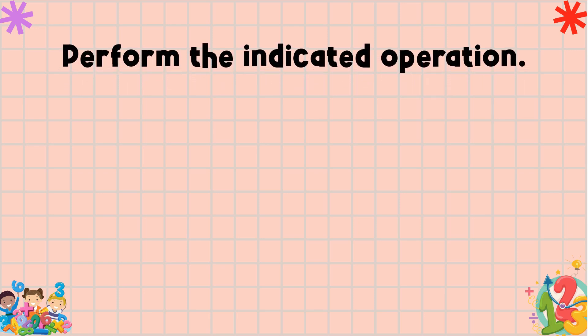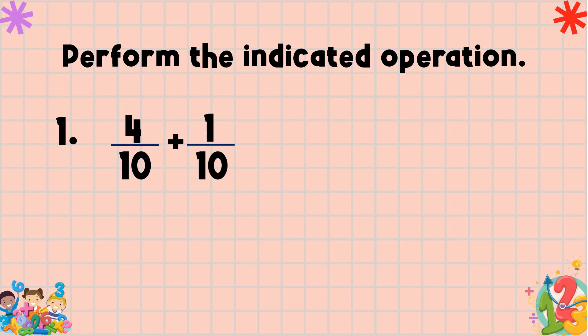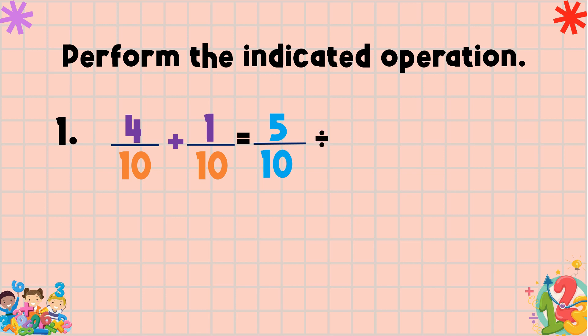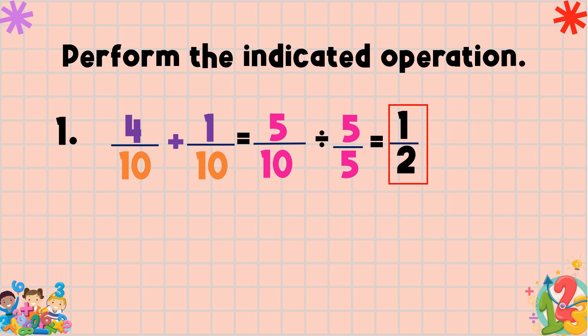Perform the indicated operation: four tenths plus one tenth. First, we add the numerators — four plus one is equal to five. Then copy the common denominator, which is ten. Are there any common factors between five and ten? Yes — both are divisible by five. So five divided by five is one, and ten divided by five is two. The lowest term of five tenths is one half, and this is our final answer.